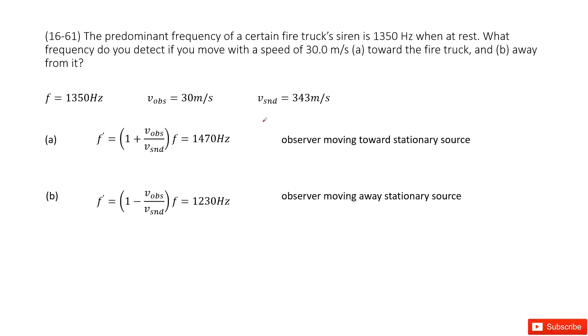Now let's see what happens. There we have the observer, the person, and the stationary source truck. And it tells us the truck is stationary.